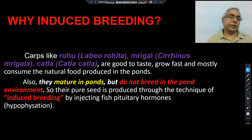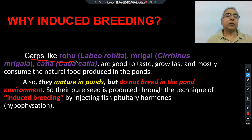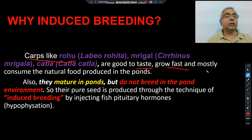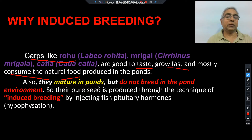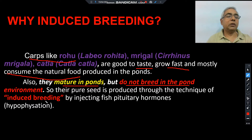Why is induced breeding required? The carps generally cultured are rohu, mrigal, and katla. All these fishes are very good to taste, they grow fast, and they consume natural food available in the pond. They also become sexually mature in ponds, but since the pond has no flowing water, they do not breed in the pond environment. So every year we have to put new seeds in the pond for culture of these fishes.